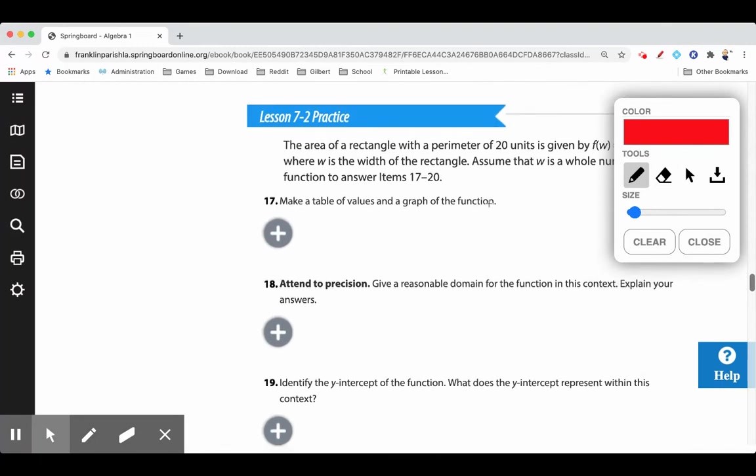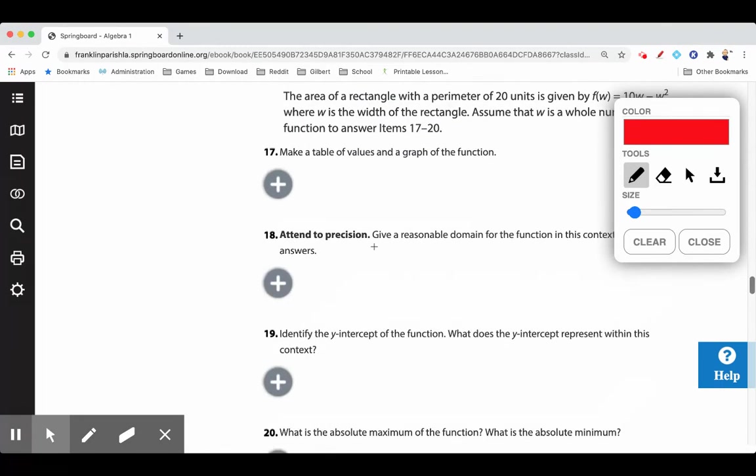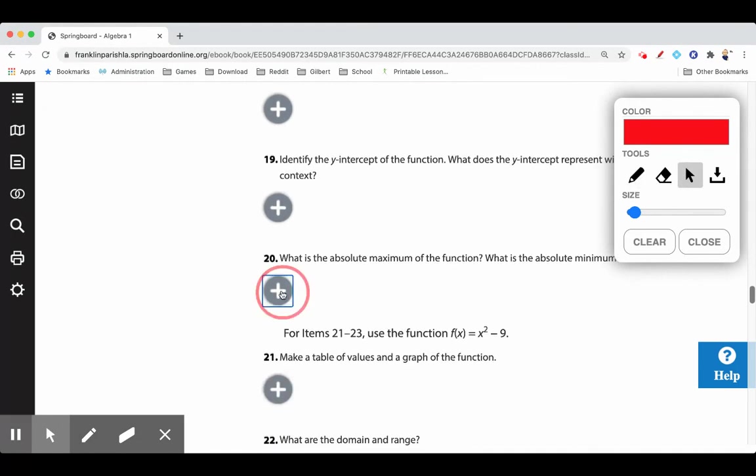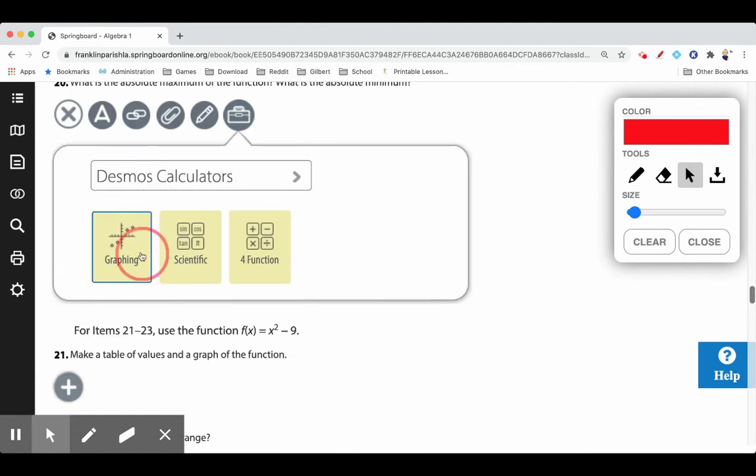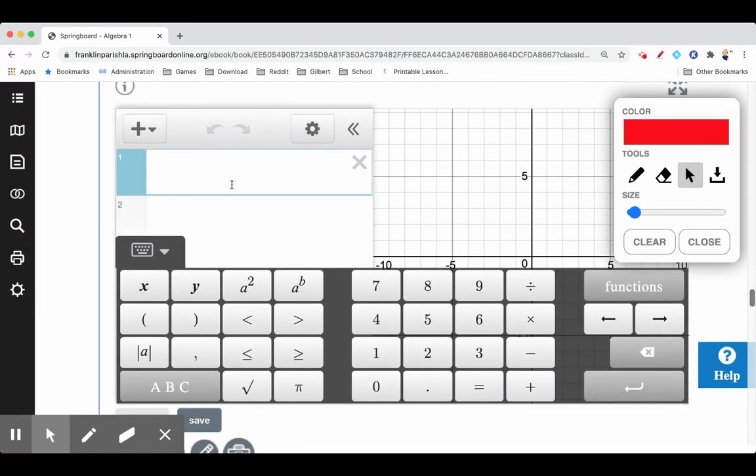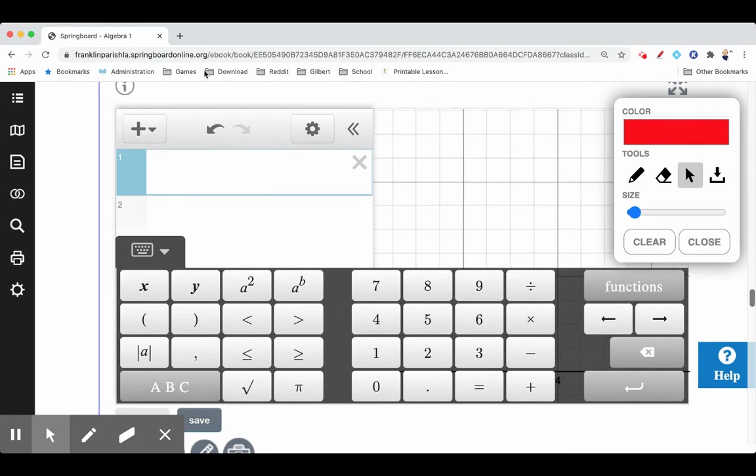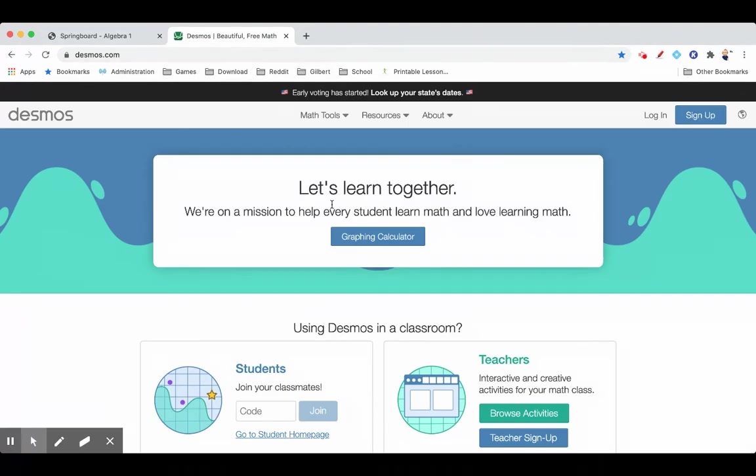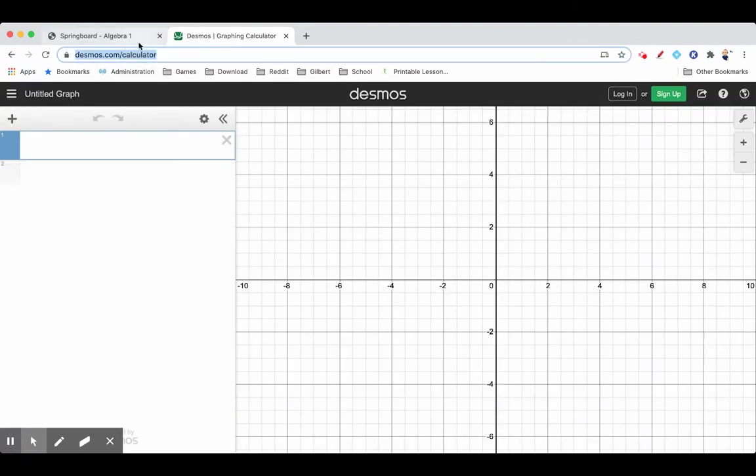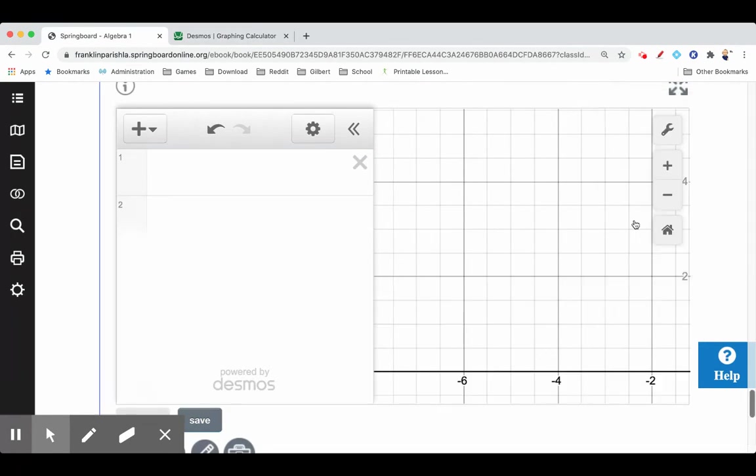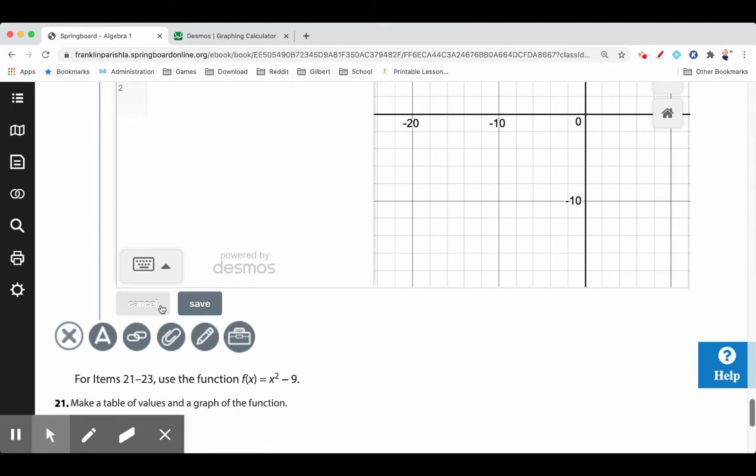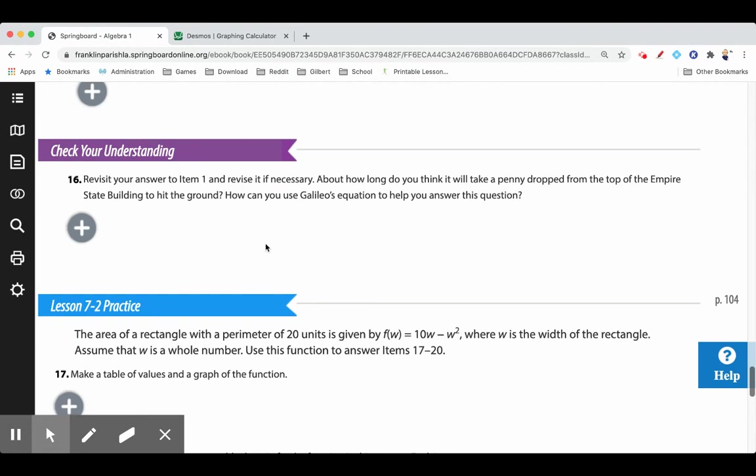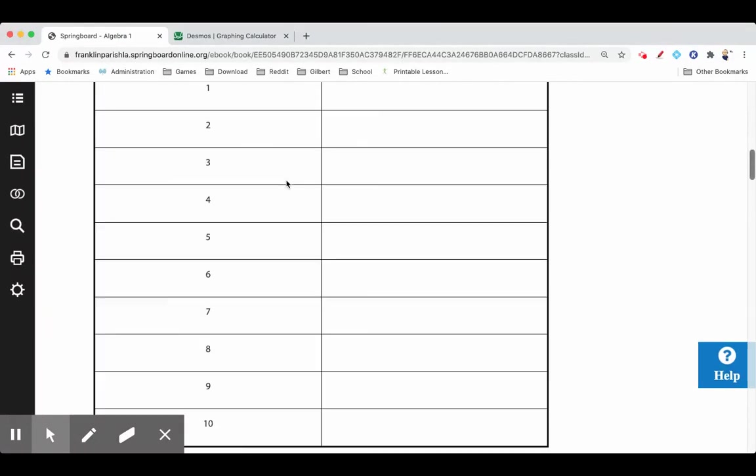Remember, you can graph these on the Desmos calculator at desmos.com, D-E-S-M-O-S dot com. If you click on these buttons you can get there this way and you do it inside the problems. But if you need to, you can just go over here—see right there, desmos.com—and graph your functions this way. So try these and then we'll be through with this lesson.